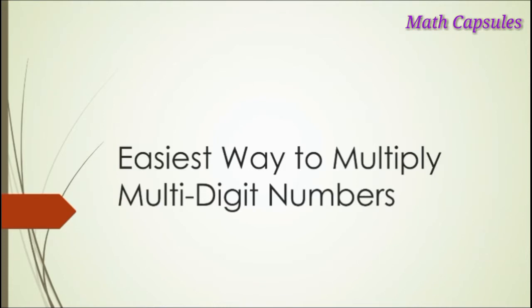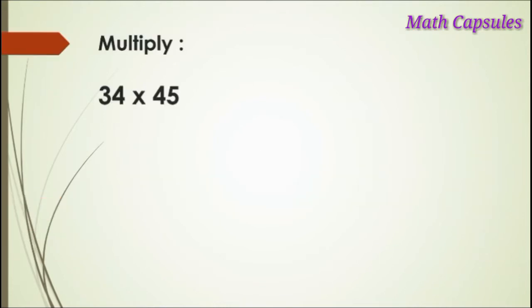An example: 34 times 45. We write the 34 as 30 plus 4, or 30 and 4, and the 45 will be 40 and 5. And here we put the multiplication.